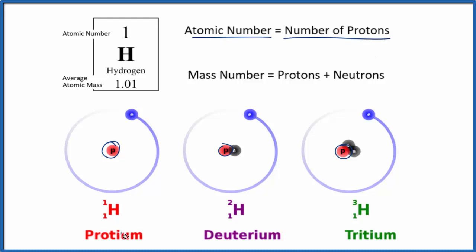So for protium, the atomic number is one because it has one proton. For deuterium, the atomic number is one, one proton. And finally, tritium, one proton, you guessed it, the atomic number, number of protons, is one.